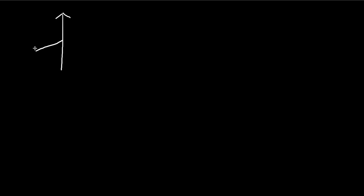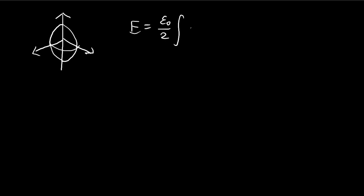Once again, like the previous video, we need to find the amount of energy required to construct the sphere. This time we're going to use the second method — this formula — so the amount of energy required is equal to epsilon over 2 multiplied by the electric field magnitude squared times a unit of volume.